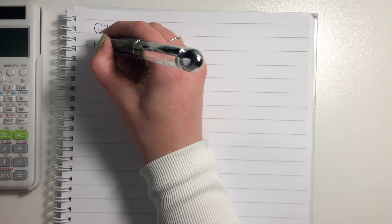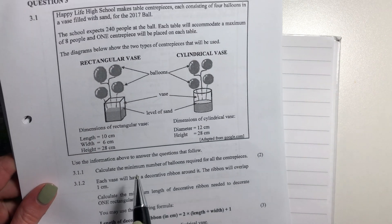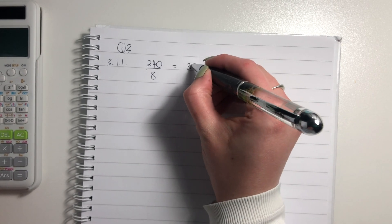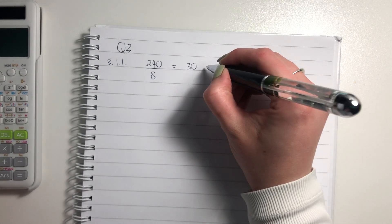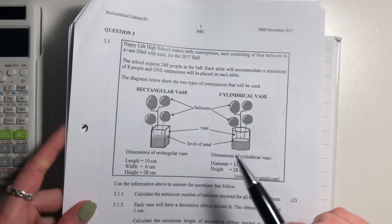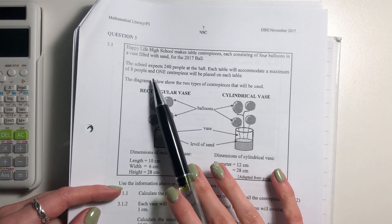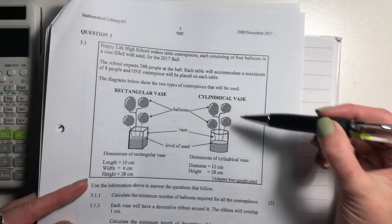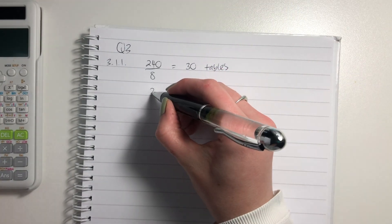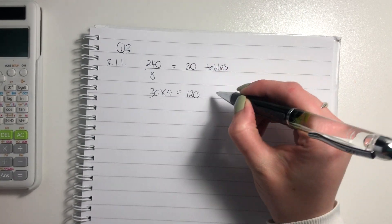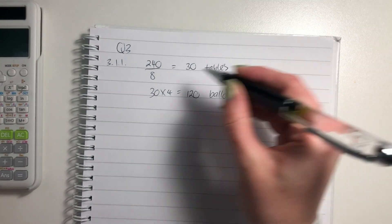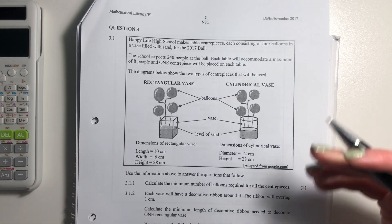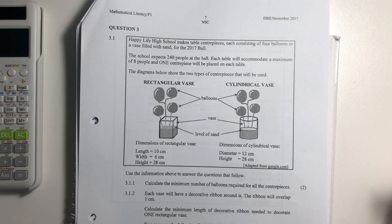Question 3.1.1. It says minimum number. So we know that there's 240 tables with eight people at each table. Put that in your calculator. That's 30 tables. Now, each table has one centerpiece, because it says one centerpiece will be placed on each table. Each centerpiece has four balloons. So then we say 30 times four equals 120 balloons. So that's us done there. That's just like kind of like a logic question more than anything else. But make sure that you're picking up the particulars of this question as you go through it.